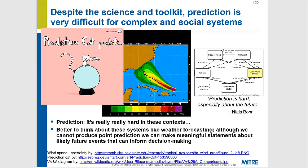Given this model, given our understanding of this system, given how we think things are going to go in the future, these are the sorts of outcomes we would expect to see. Of these outcomes, this one is the most likely, this one's second most likely, and so on. You can start to layer in more information to make it more useful from a decision support perspective by saying not only is this the most likely outcome, this is the trajectory that you'll be on to get there.